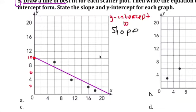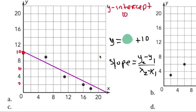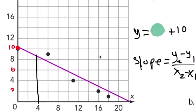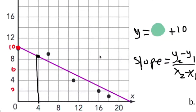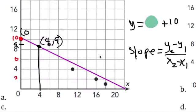We need to write a line y equals mx plus b. We got 10 as the y-intercept, so we need to find m — we need to find our slope. Slope is y₂ minus y₁ over x₂ minus x₁. I'm going to choose the point (4, 9) — I'm estimating that number to be 9. So 4 and 9.